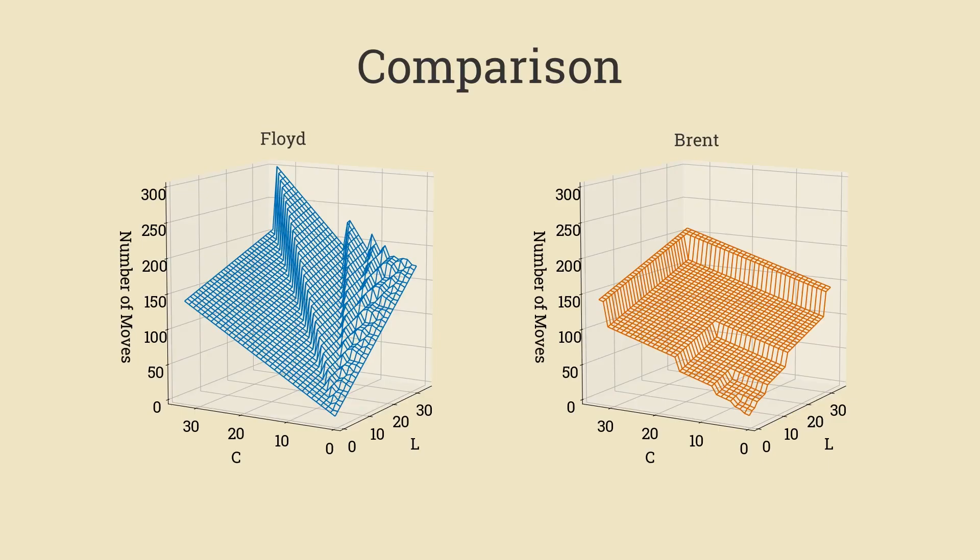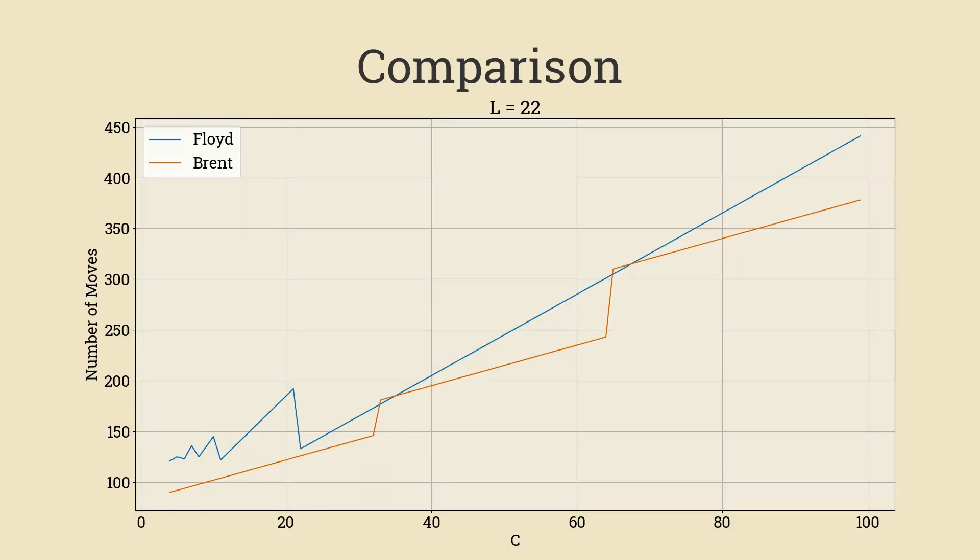So here are two cool looking plots. It's a little bit hard to see what's going on, so let's switch over to a 2D view. In this view, you can see that Brent's algorithm is below Floyd almost always, but it does peak out above every once in a while. What I thought was interesting with these bumps. Can you explain why they happen where they are?